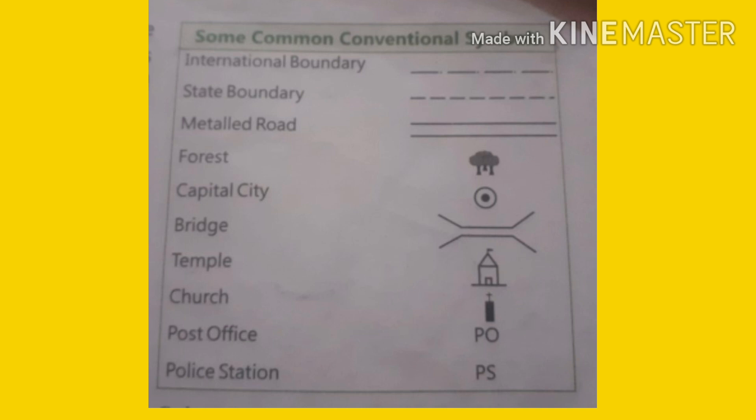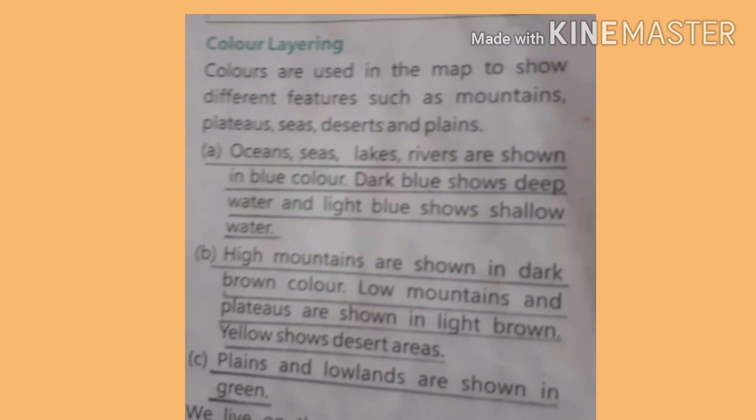You can see temples and other features represented by symbols on the map. Now, colors are also used in maps to show different features such as mountains, plateaus, seas, deserts, and plains.